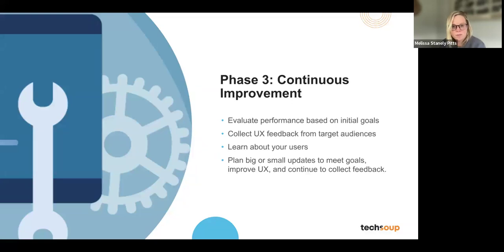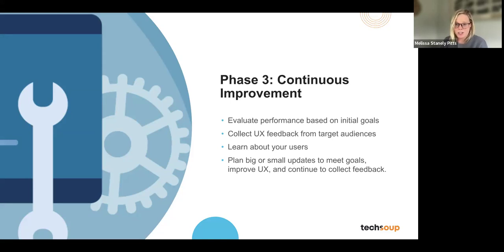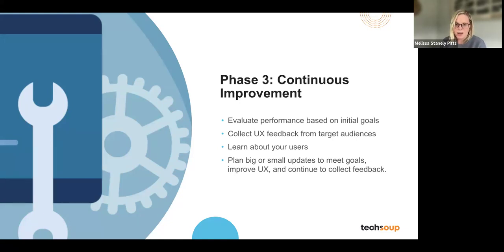Phase three is continuous improvement — this piece is intended to keep going as your organization grows, with your website growing along with it. We take a look at the metrics and goals we outlined in the strategy phase and track how we're performing. Maybe the thing we build initially isn't resonating; maybe we need new or additional content to help your audience take the action you want. We can learn about your audience, correct initial assumptions, and adjust the website. If you have new programs or new people join your team, all of that can be updated without starting from scratch.